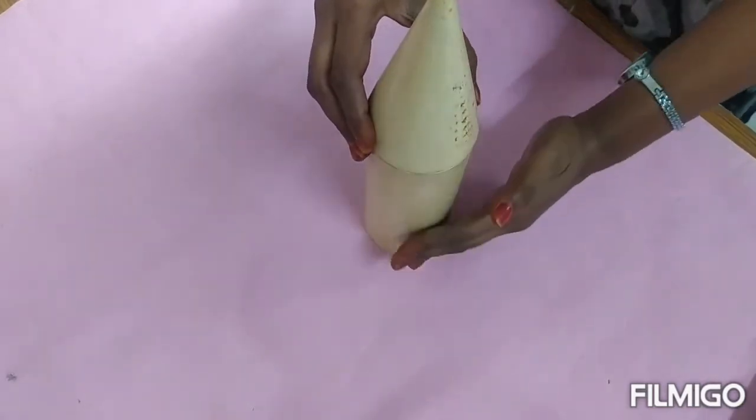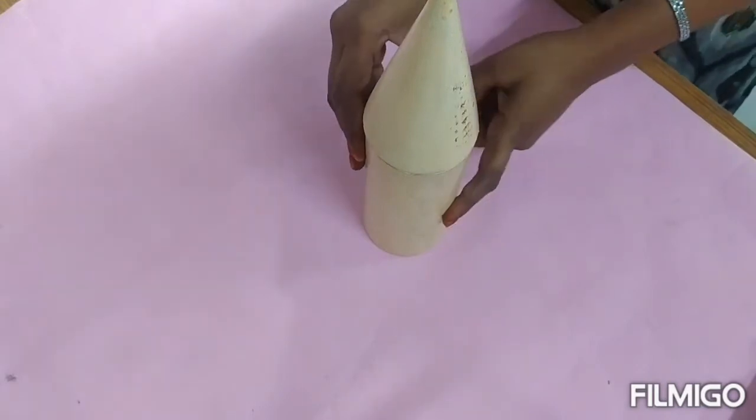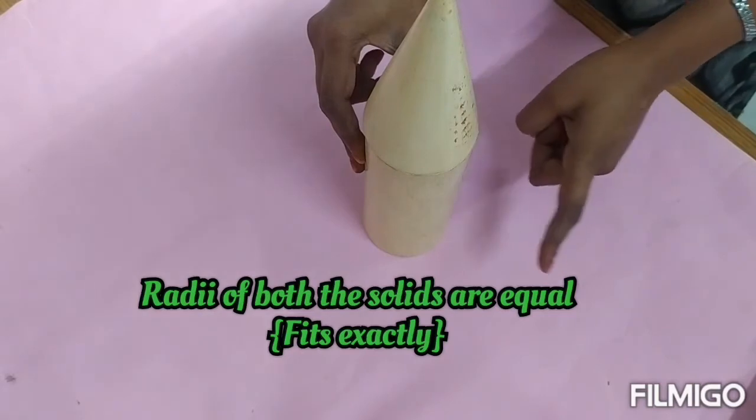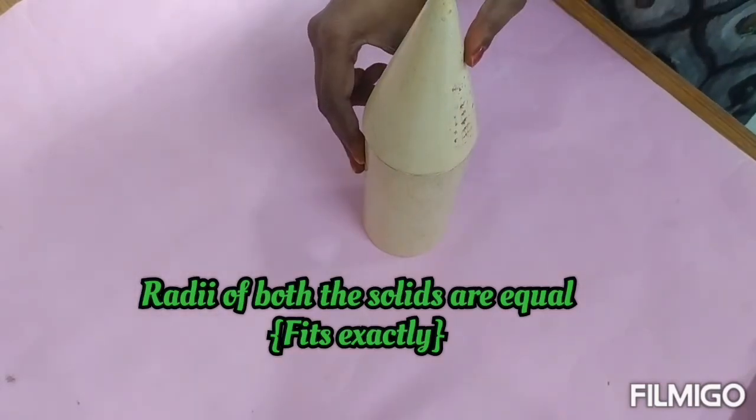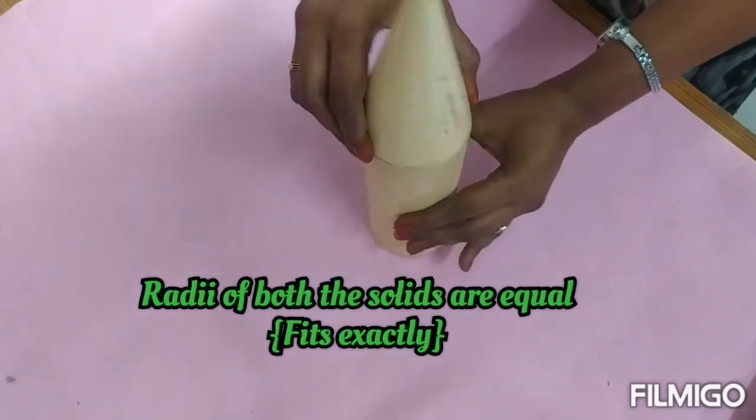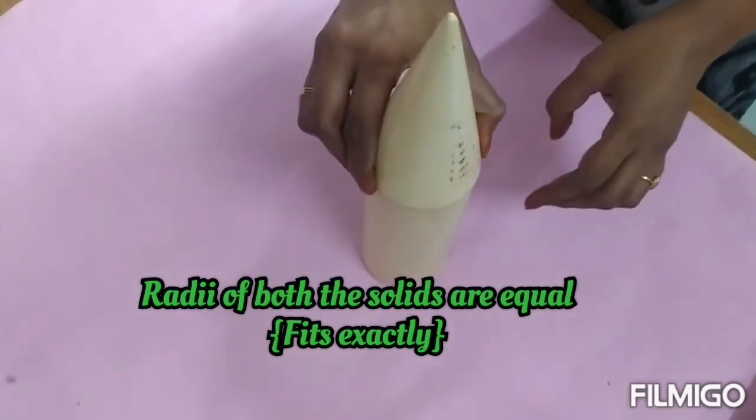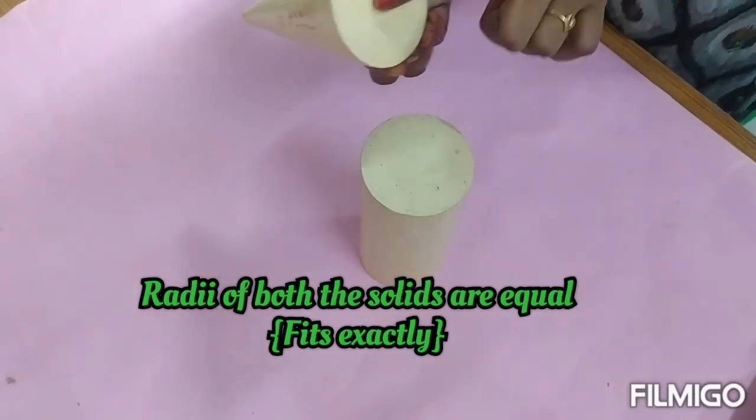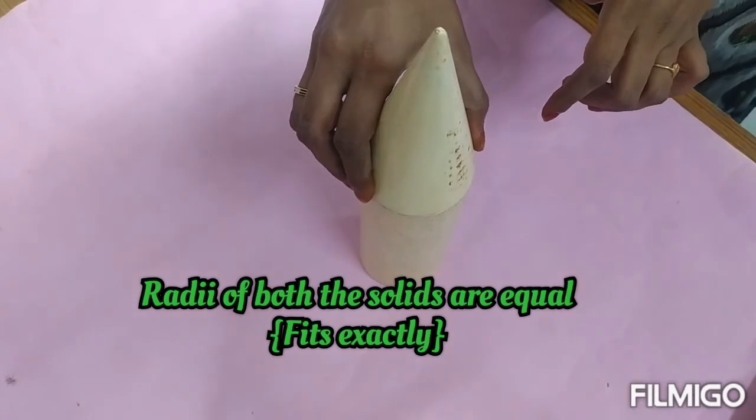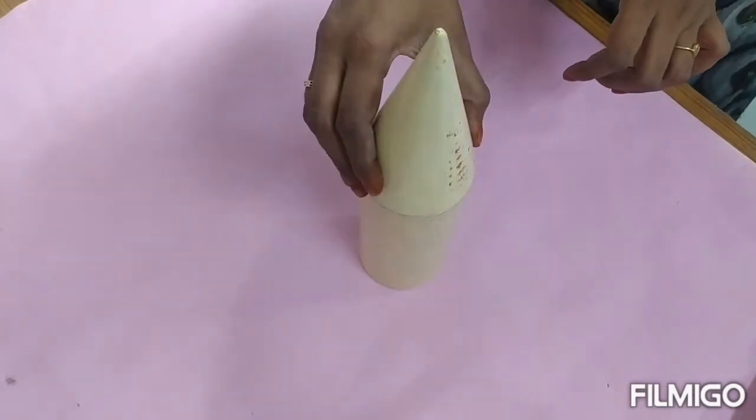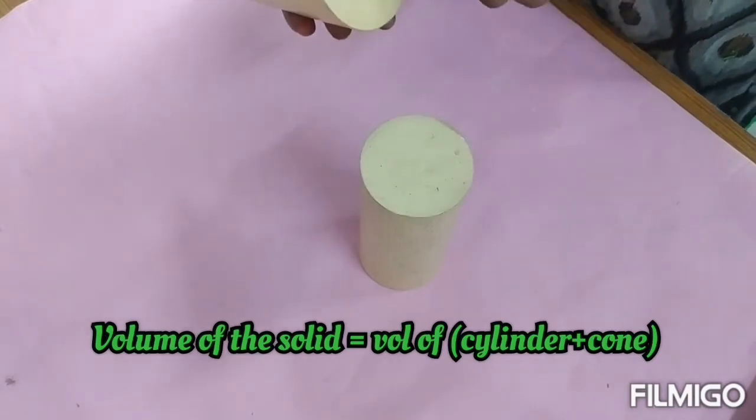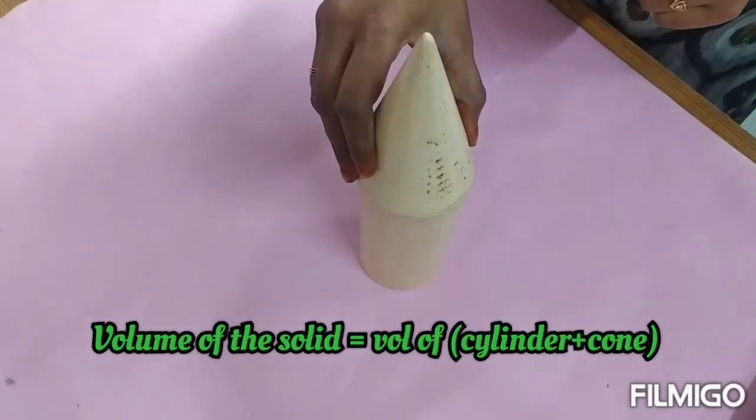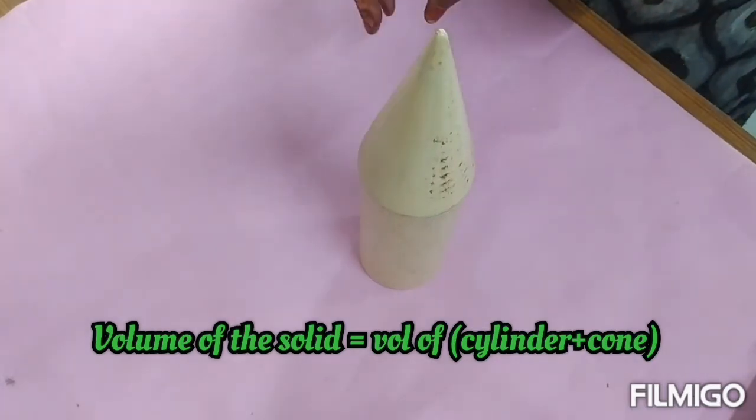In this question they have given directly that the radii of both the solids are equal. But they won't give directly in all the questions. Instead they may use the word 'fits exactly'. If the radii of both the solids are equal, then they must fit exactly. So if they are giving 'fits exactly', we can assume the radii are equal. Now to find the volume of the solid, we will use the direct formula: volume of the cylinder plus volume of the cone. And we will substitute the value of the radius and height and find the volume of the solid.